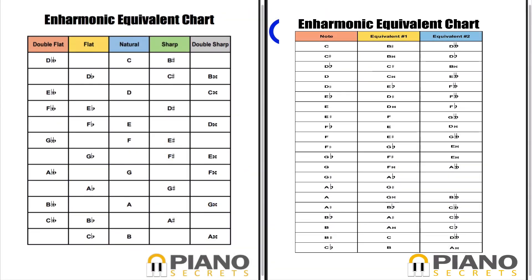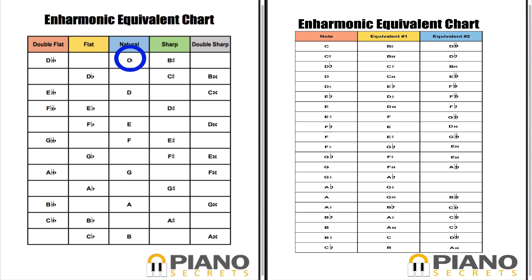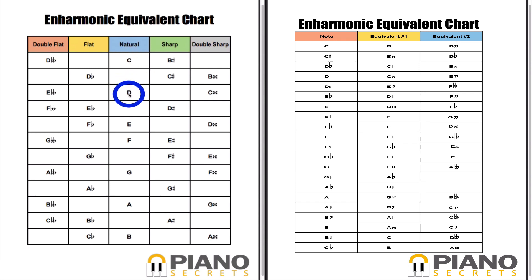The next two charts are pretty similar to each other, but there are a couple of key differences. The chart on the left is set up in a way that mimics how the piano keyboard is laid out. The blue column represents all of the natural notes, going in order: C, D, E, F, G, A, and B, with a space between where a black key would appear. So we have C, then D-flat/C-sharp, then D, then D-sharp/E-flat, then E, then F, then F-sharp and G, and so on up the keyboard.